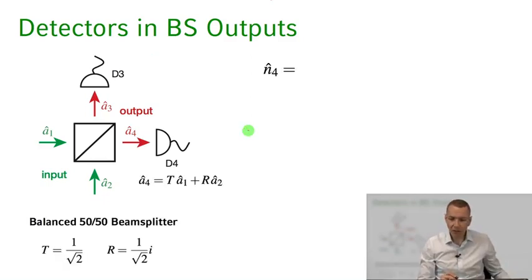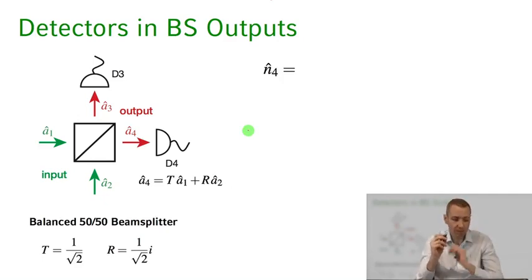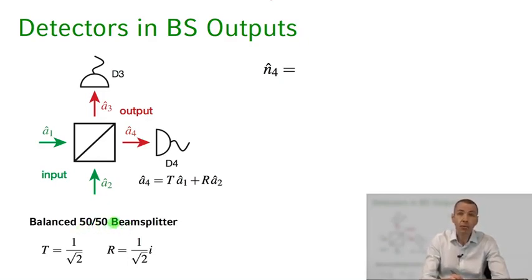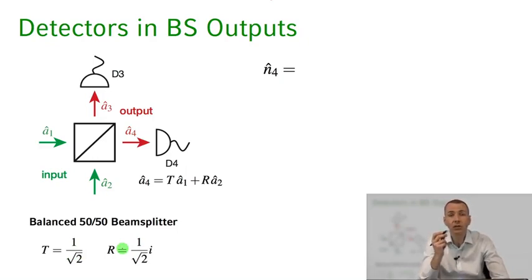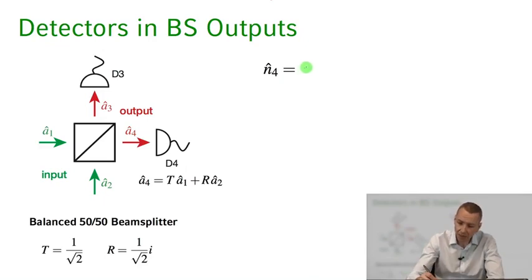Now let's calculate N̂₄ for the situation of a balanced beam splitter — that is a 50-50 beam splitter written in symmetric form, giving rise to transmission and reflection coefficients in a simple form. The transmission coefficient is 1/√2, and the reflection coefficient is i/√2, due to the 90-degree phase shift picked up upon reflection.